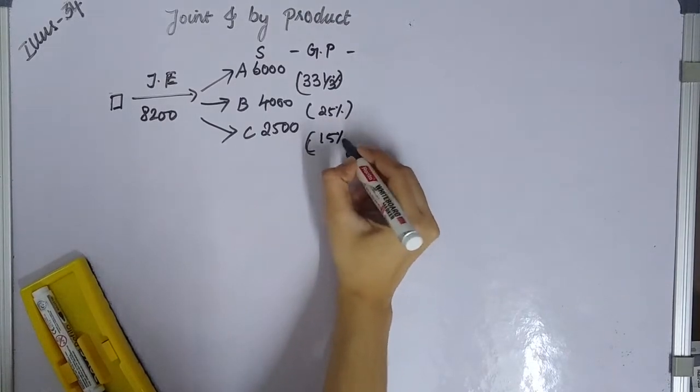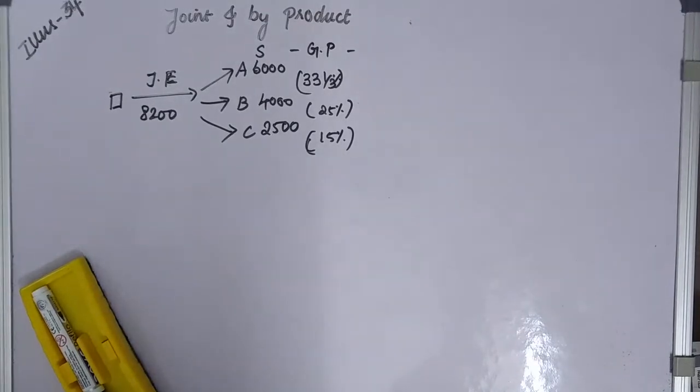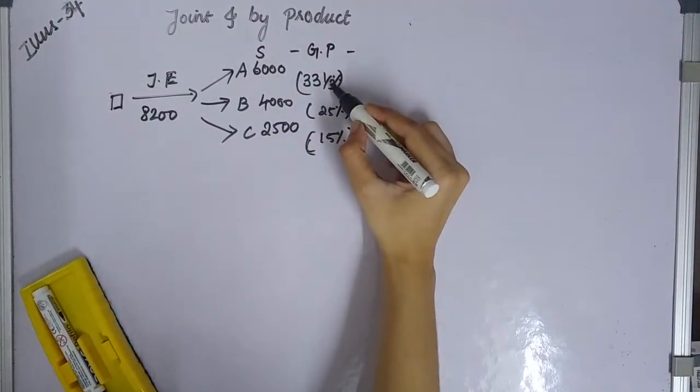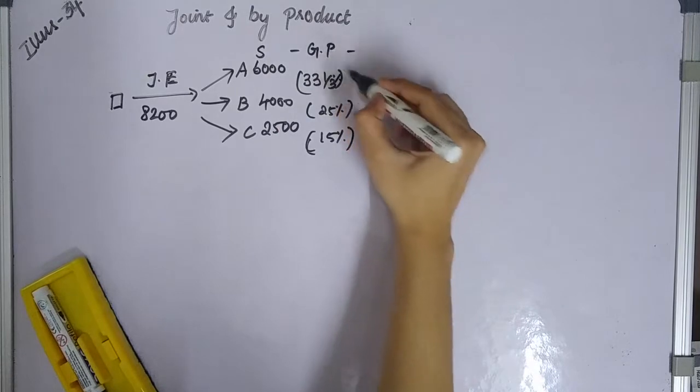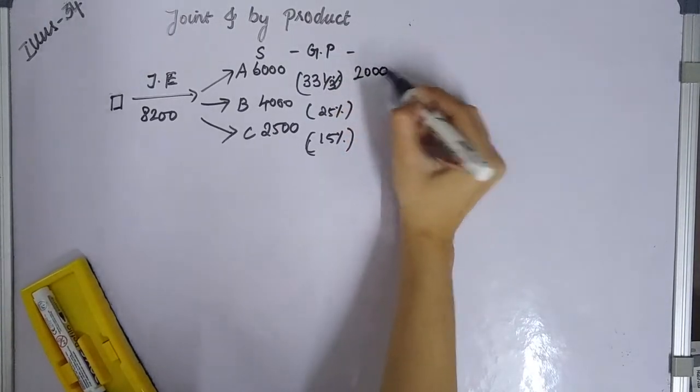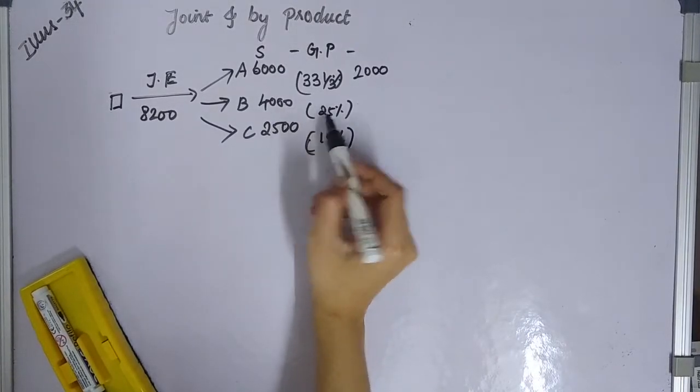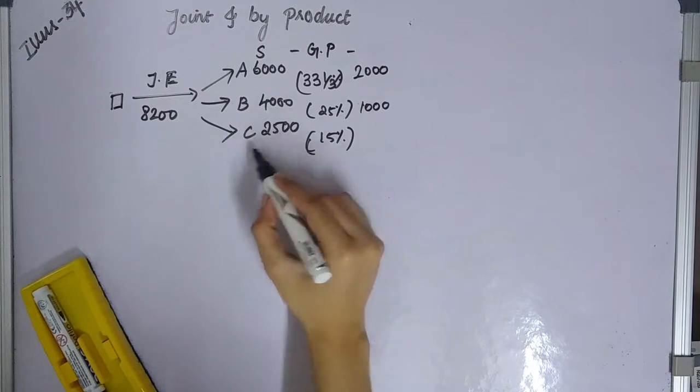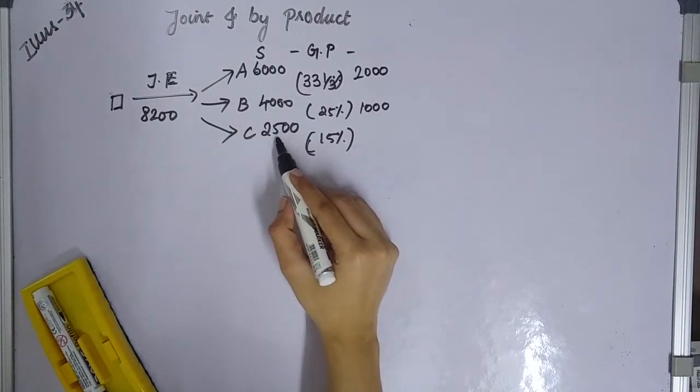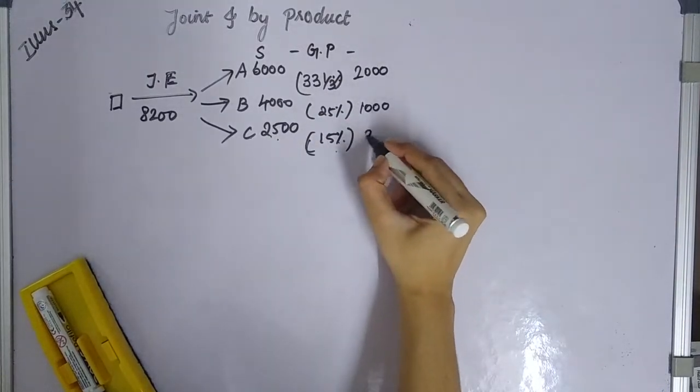For A: 6000 times 33 1/3% equals 2000 gross profit. For B: 4000 times 25% equals 1000 gross profit. For C: 2500 times 15% equals 375 gross profit.